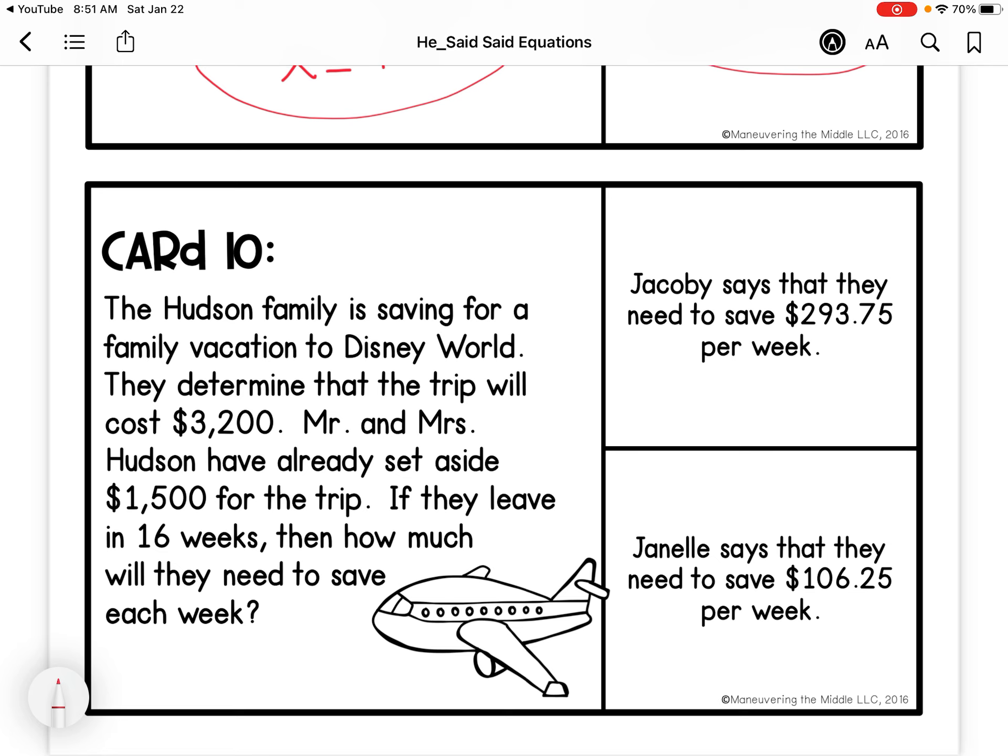Last one. The Hudson family is saving for a trip to Disney World. It costs $3,200. Mr. and Mrs. Hudson already set aside $1,500 for the trip. So $1,500 is set aside. And then they save for 16 weeks. So plus 16 W. They need $3,200.